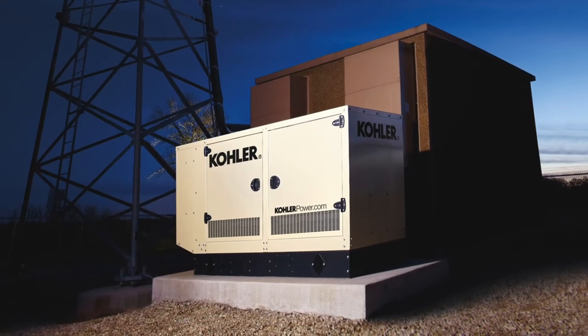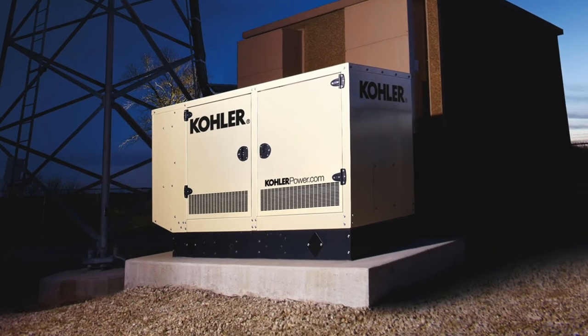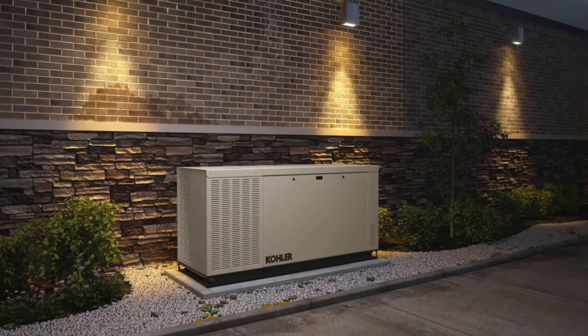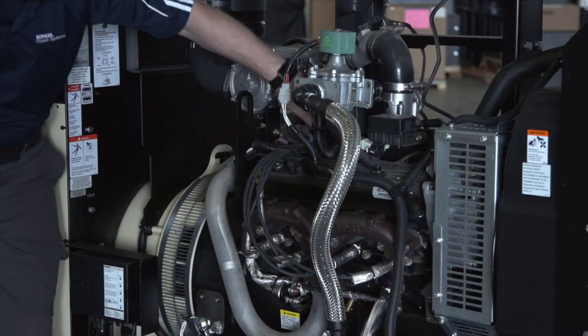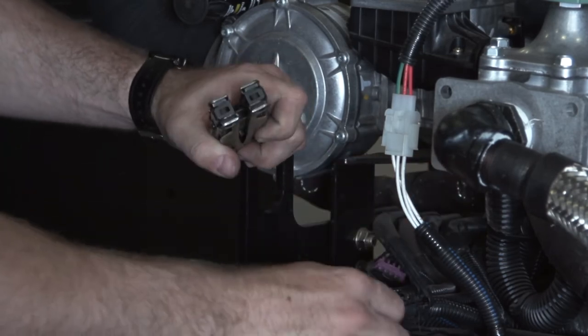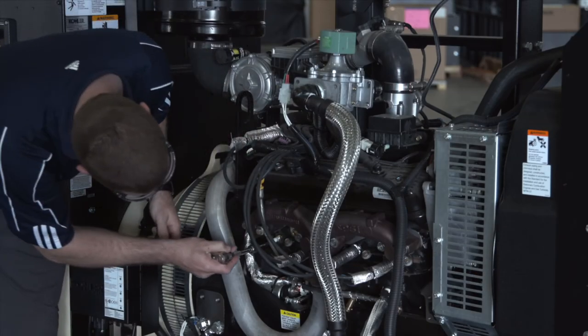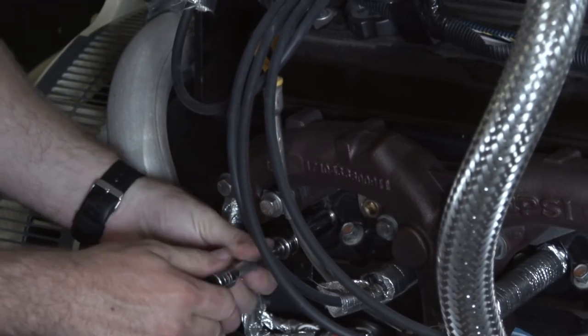Usually the engine used to power a gaseous standby generator system is a four-stroke spark ignition or SI engine, and these engines are referred to as having a closed-loop ignition system. Your authorized Kohler distributor understands the operation of a closed-loop ignition system, the components within the system, and the key maintenance points to ensure reliable operation of gaseous generator systems.